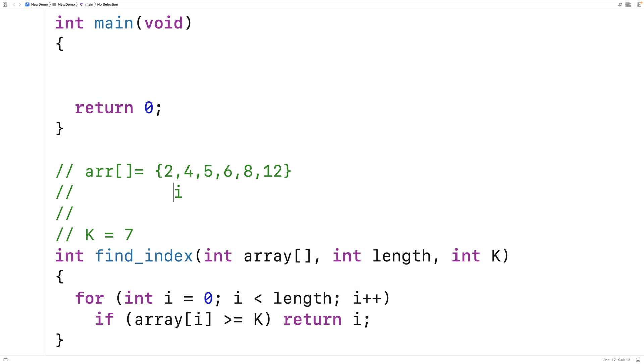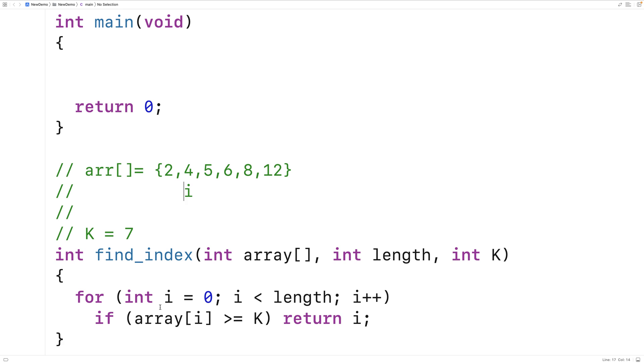And now i is going to look at the next index in the array. We check again. Is the array at index i greater than or equal to K? It's not. We keep going. Is 5 greater than or equal to 7? It's not. We keep going. Is 6? It's not. We keep going.